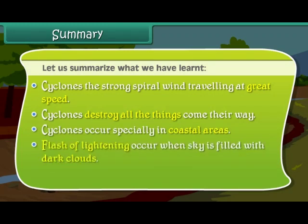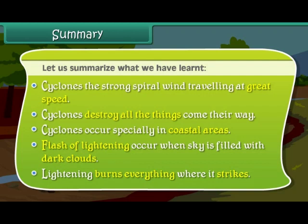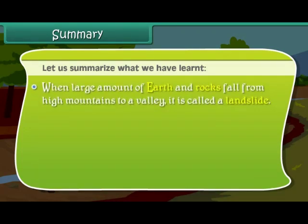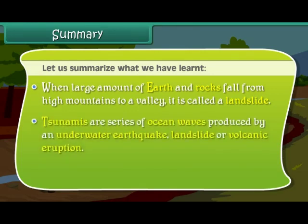A flash of lightning occurs when the sky is filled with dark clouds, and lightning burns everything where it strikes. When large amounts of earth and rocks fall from high mountains to a valley, it is called a landslide. Tsunamis are series of ocean waves produced by an underwater earthquake, landslide, or volcanic eruption.